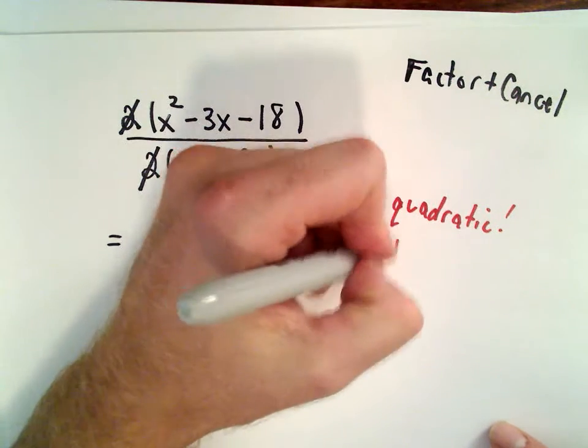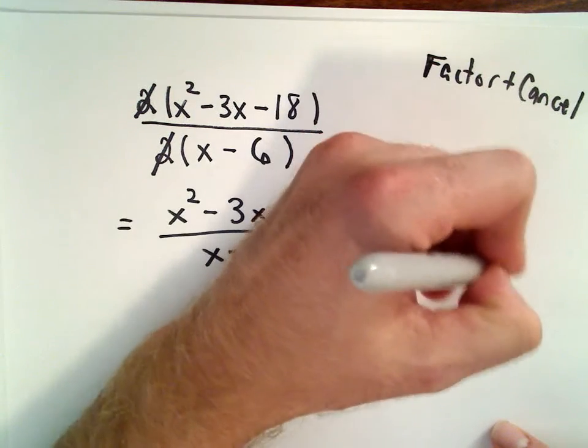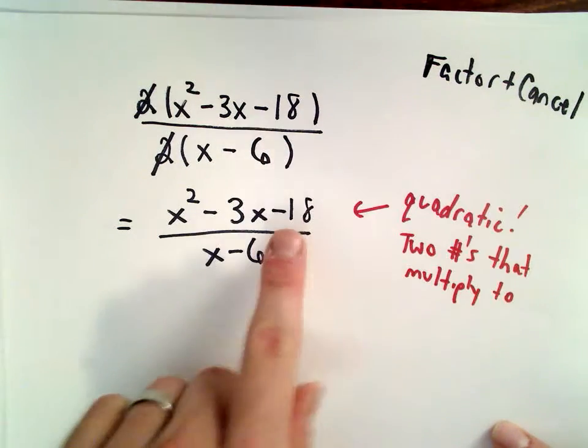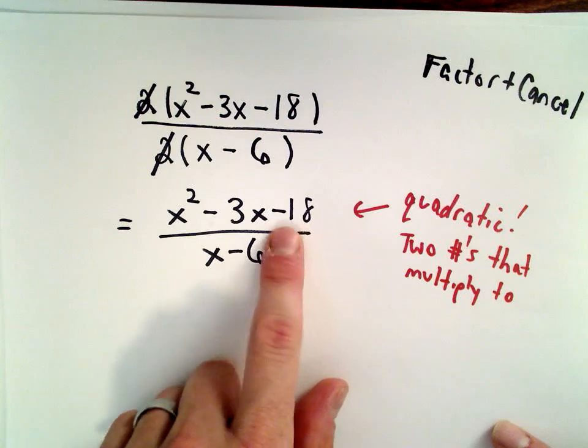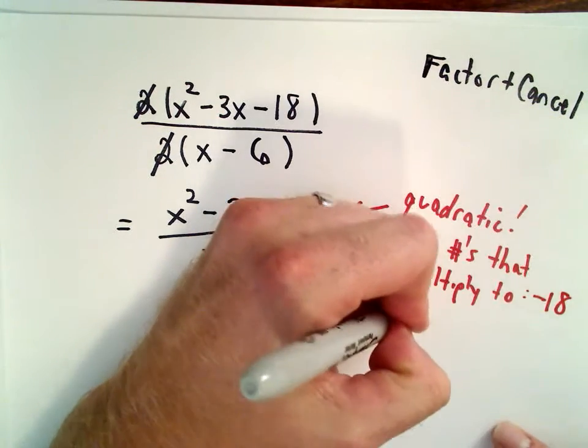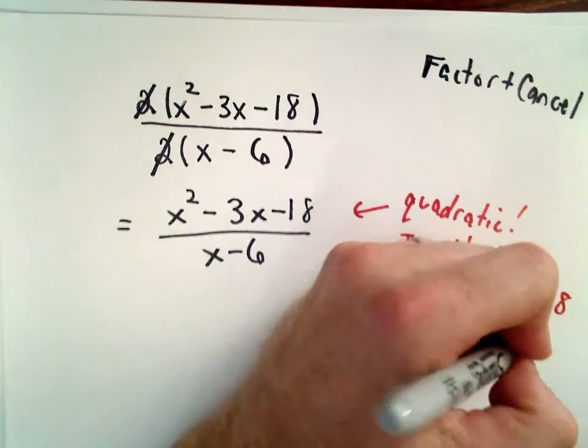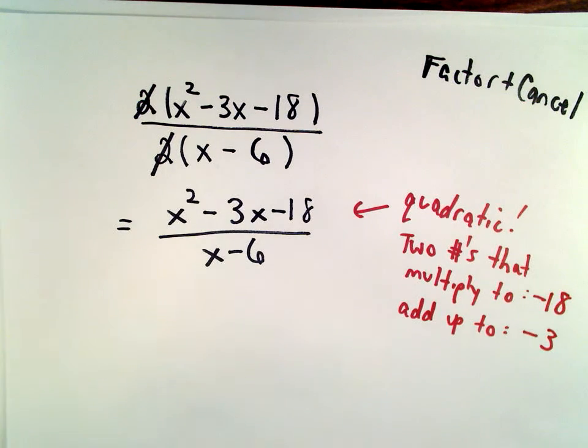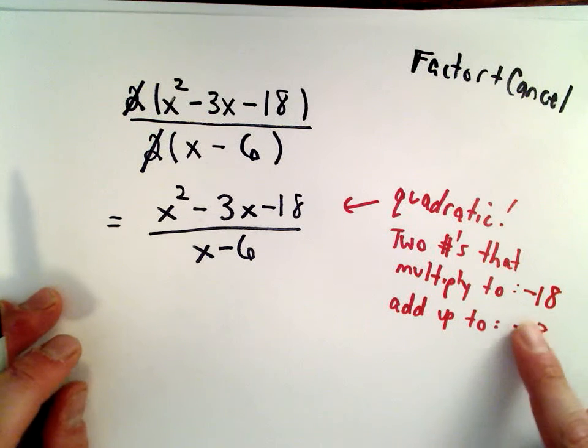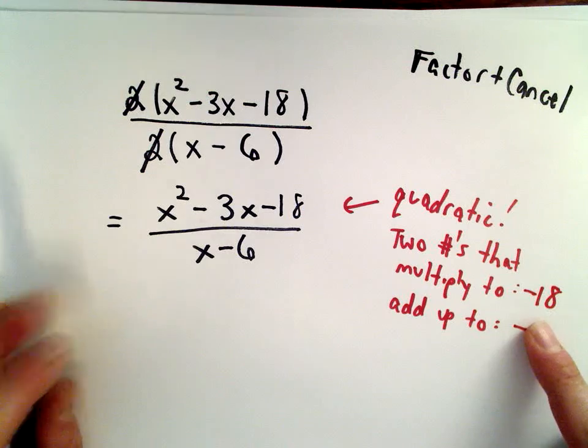That multiply to the constant. That's the number that doesn't have any x attached to it. So two numbers that multiply to negative 18, but we want them to add up to the number in front of x, which is negative 3. So two numbers that multiply to negative 18. So again, I'm going to need a positive and a negative number, something in one in 18. That would work, 2 and 9, 3 and 6.